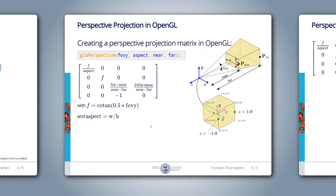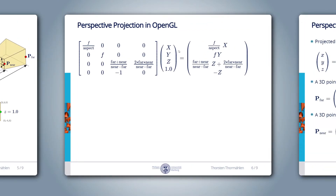Let's have a look at the 4x4 matrix that is generated by a function called gluPerspective from the OpenGL utility library. It has four floating point parameters: the field of view in Y-direction, the aspect ratio, the distance of the near plane, and the distance of the far plane. The 4x4 matrix shown here is created. Now let's check if this matrix fulfills our requirements. X, Y, Z are the Cartesian coordinates of the 3D point. To represent it in projective space, we set the fourth coordinate to 1. Now we multiply this point with the generated 4x4 matrix and check the result.